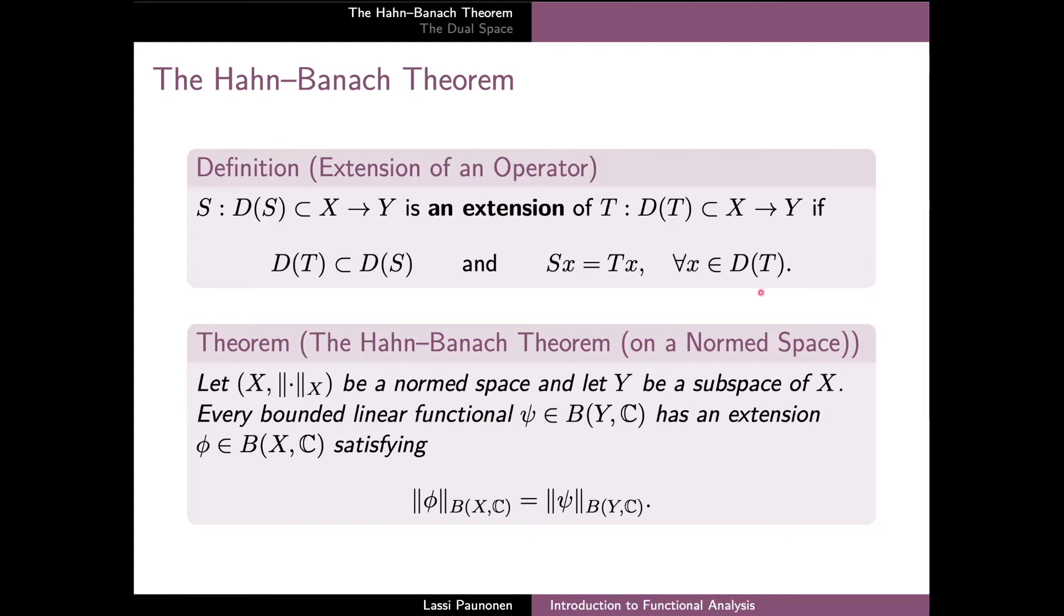More precisely, if X is a normed space and if Y is a subspace of X, then a bounded linear functional Psi defined on the subspace has an extension Phi defined on the whole space X, and moreover this extension Phi has the same operator norm as the original functional Psi.